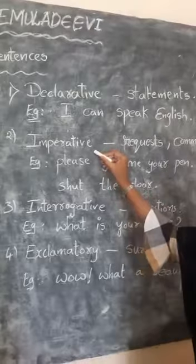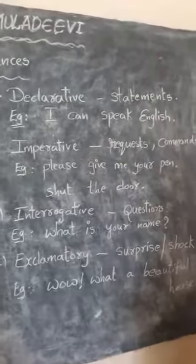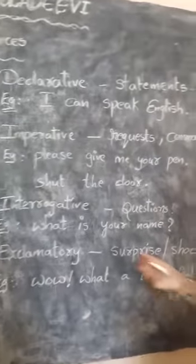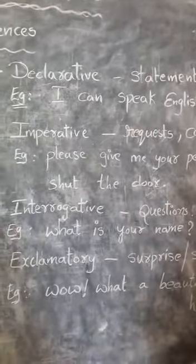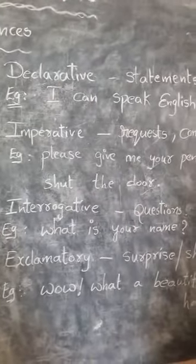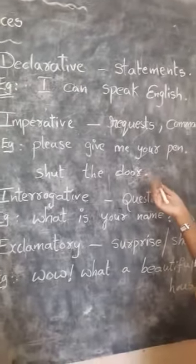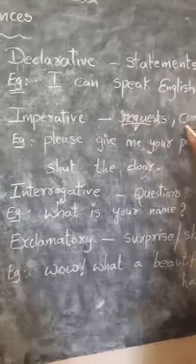Next, imperative sentence. Imperative sentence means requests and commands. Any type of request. For example, please give me your pen, shut the door, switch on the fan. These are all imperative sentences because they are requests or commands.